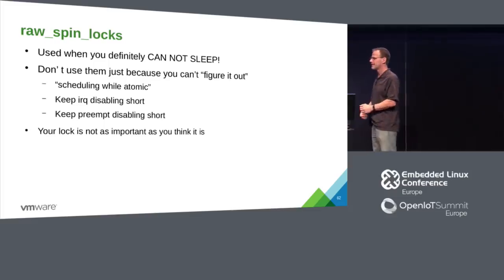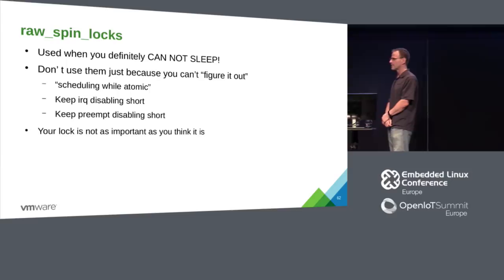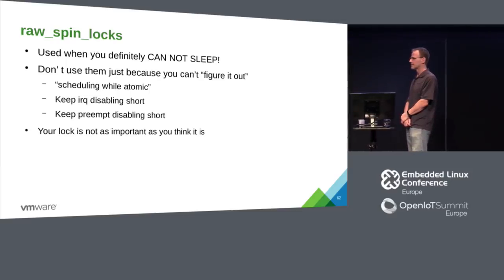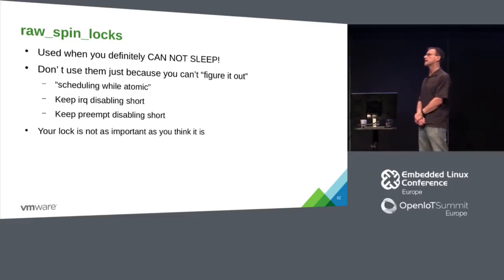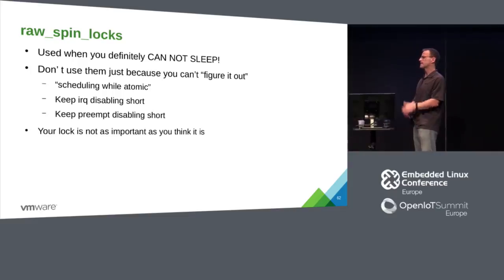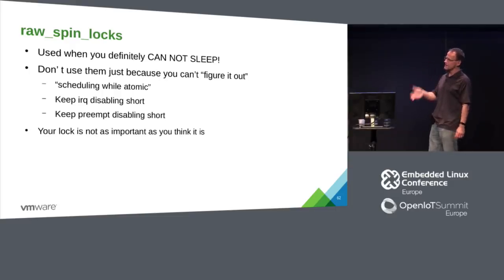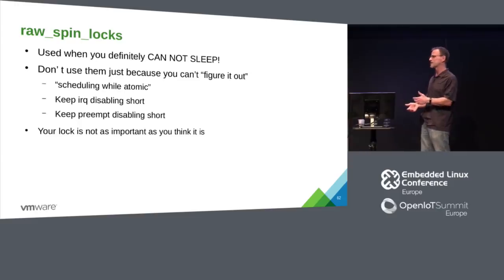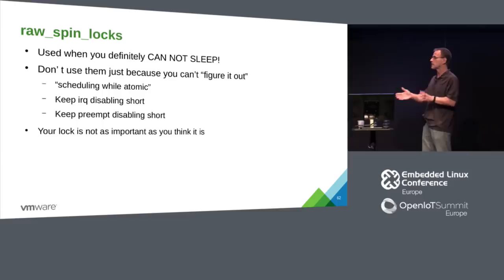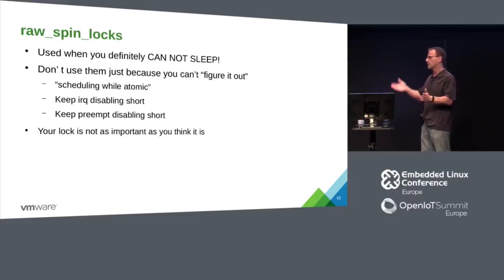A comment about RCU: use RCU when you can, but be aware RCU is extremely fast for readers but horrible for writers. If you have many writers, RCU will hurt your performance. The speaker agrees but says try to restructure your code to reduce writers and use more RCU because it scales, while RWMutex does not.